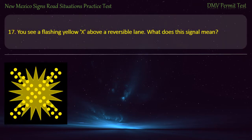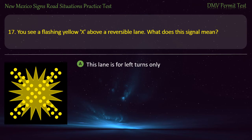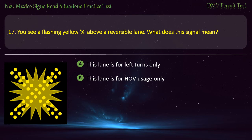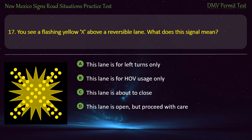Question 17. You see a flashing yellow X above a reversible lane. What does this signal mean? Options: This lane is for left turns only; this lane is for half usage only; this lane is about to close; or this lane is open but proceed with care. Answer: This lane is for left turns only.